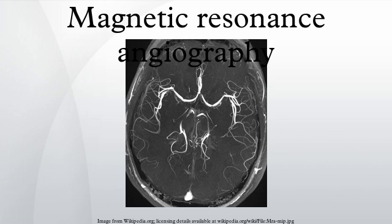One group of methods for MRA is based on blood flow. Those methods are referred to as flow-dependent MRA. They take advantage of the fact that the blood within vessels is flowing to distinguish the vessels from other static tissue, and that way images of the vasculature can be produced. Flow-dependent MRA can be divided into different categories.